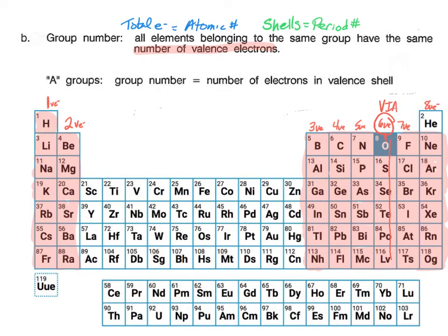And how many valence electrons do you expect for gallium? We find that it's in group three A, so it will have three valence electrons, along with boron, aluminum, indium, thallium, and nihonium.